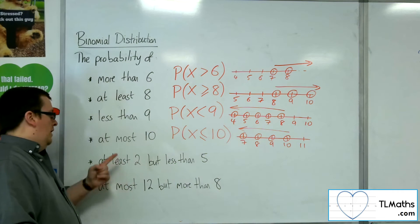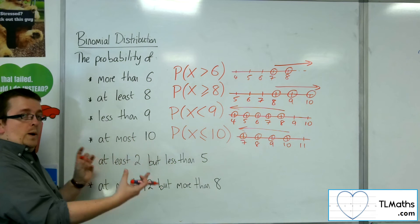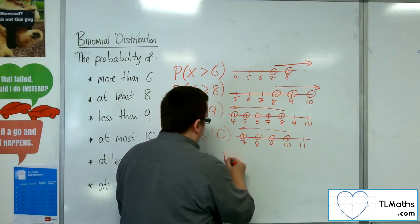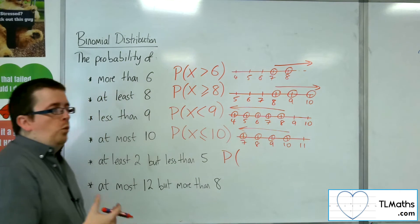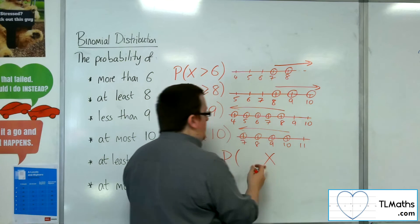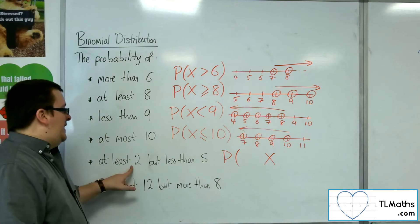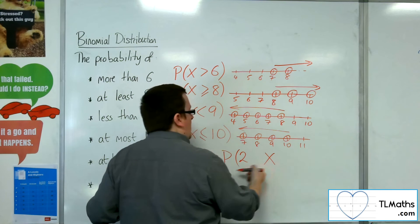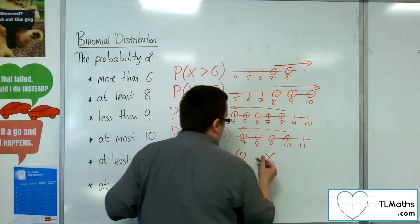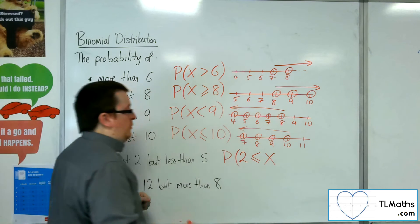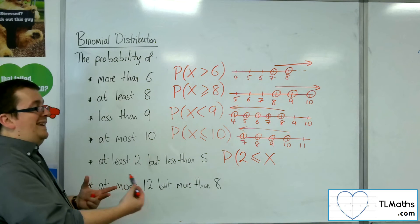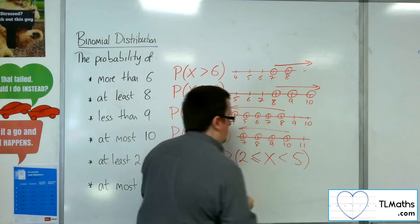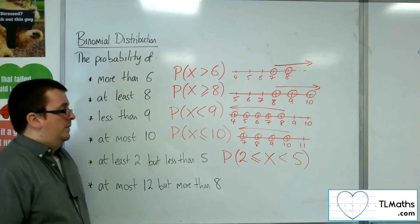Now if you've got wordings like this, so you've got a between range, at least 2 but less than 5. So if you want at least 2, now remember, X has got to go in the middle and you work your way outwards here. So at least 2, I would want X to be greater than or equal to 2. So reading it from right to left, I want at least 2 but less than 5. So that would be the probability I want.